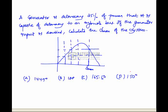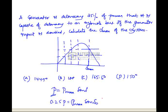A generator is delivering 25% of power that it is capable of delivering to an infinite bus. We know that P equals P max sine delta which is going to be delivered to the infinite bus. But out of total power P, it is only capable of delivering 25%, so 0.25P equals P max sine delta naught. From this we can calculate initial load angle delta naught as 14.47 degrees.